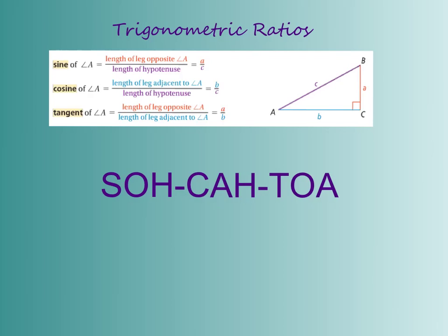So if you have a right triangle, you can find the sine of the angle by taking the opposite leg over the hypotenuse. For cosine, it's going to be the adjacent leg over the hypotenuse. And for tangent, the opposite leg over the adjacent leg.